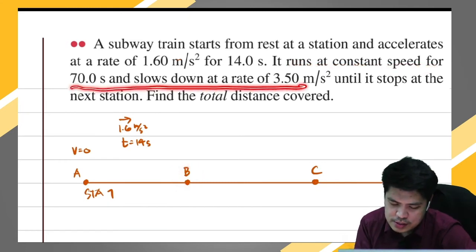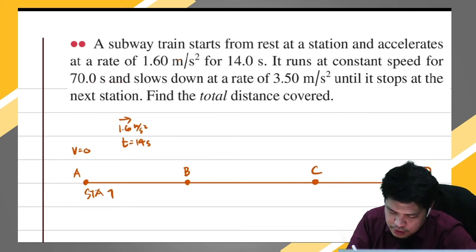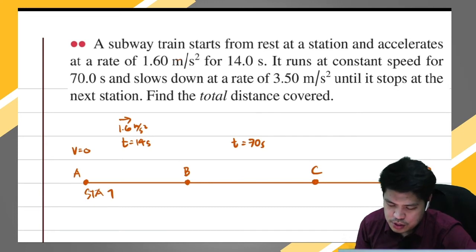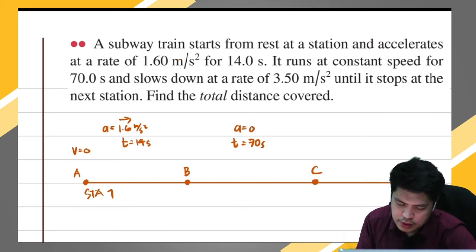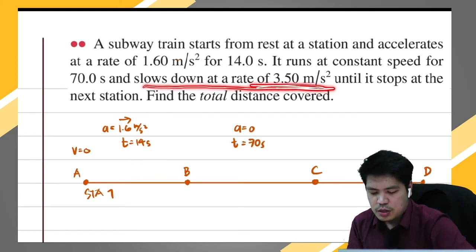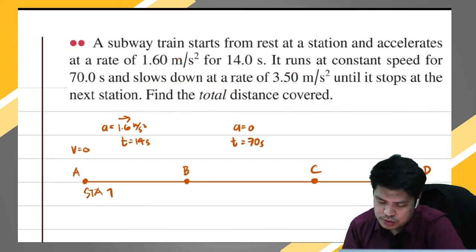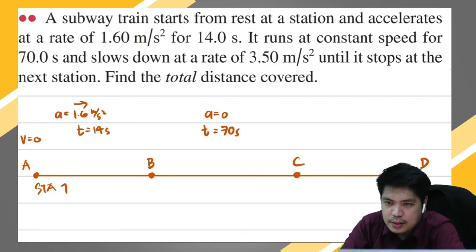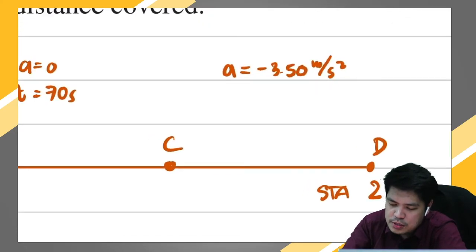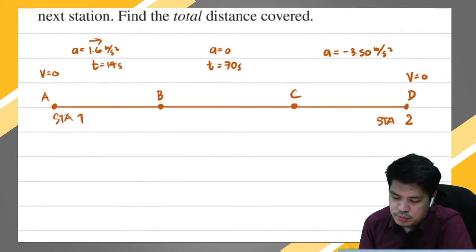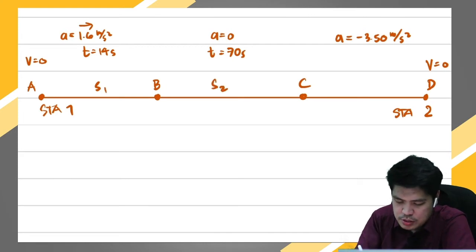The next condition is from B to C: it runs at a constant speed for 70 seconds — no acceleration. Then from C to D, it slows down at 3.50 meters per second squared — that's deceleration, so the acceleration is negative 3.50 meters per second squared — until it stops. The velocity at D is zero. We'll label the distances s1, s2, and s3 for the three segments.